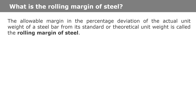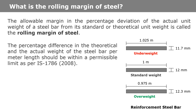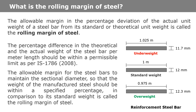The allowable margin in the percentage deviation of the actual unit weight of a steel bar from its standard or theoretical unit weight is called the rolling margin of steel. In other words, the percentage difference in the theoretical and actual weight of the steel bar per meter length should be within the permissible limit as per IS 1786:2008. The allowable margin for the steel bar to maintain the sectional diameter so that the weight of the manufactured steel should be within a specified percentage in comparison to the standard weight is called the rolling margin of steel.